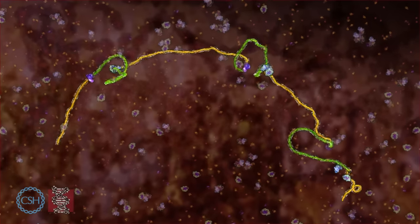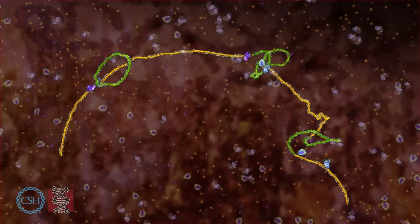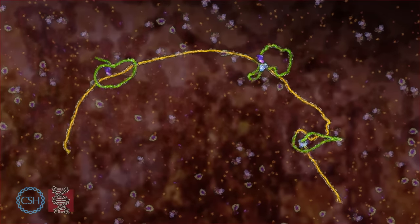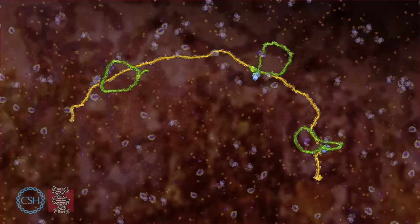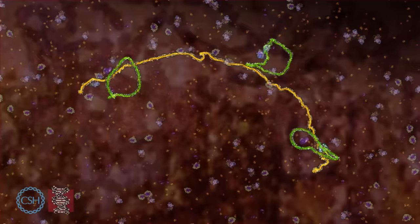Numerous splicesomes remove all introns so that the edited RNA contains only exons, which are the complete instructions for the protein. Again, this is happening in real time.